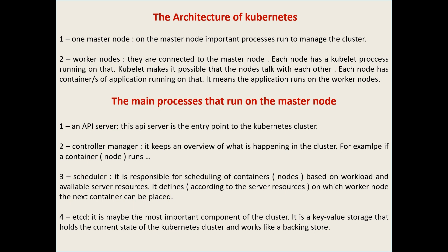The master node runs the main processes of Kubernetes itself for managing the cluster, while under the worker nodes our applications run. The worker nodes are connected to the master node, and each node has a kubelet process running on it. To summarize: the architecture of Kubernetes has two node types — the master node and the worker node.